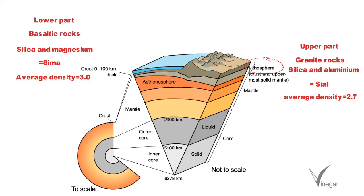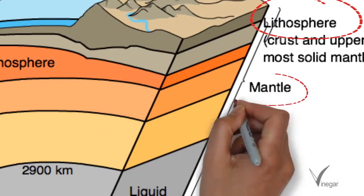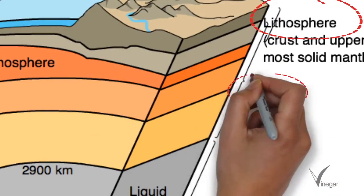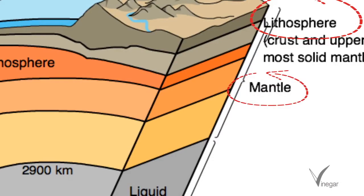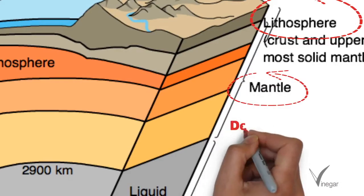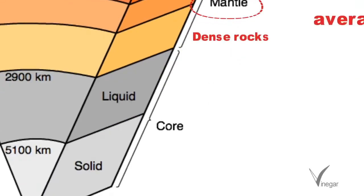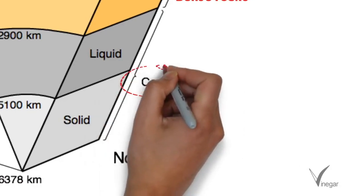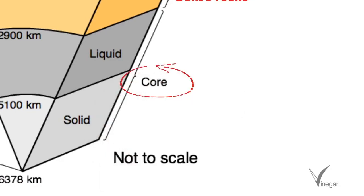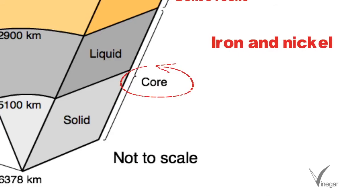Just below the Earth's crust or lithosphere, we have the mantle layer, which is also known as the mesosphere. It is made up of very dense rocks, and these dense rocks are rich in olivine. After that, we have the core, which is mainly made up of iron and some nickel.